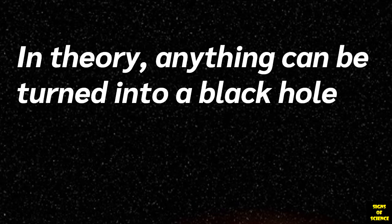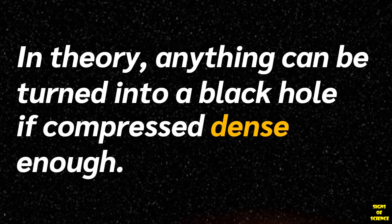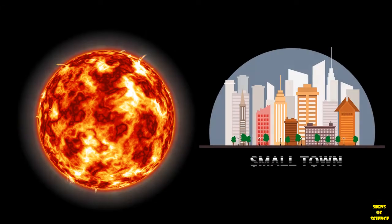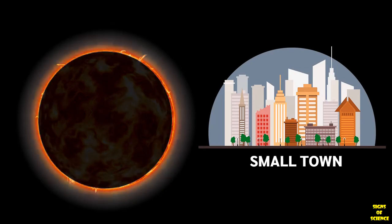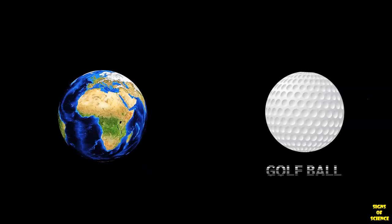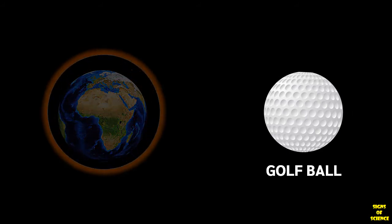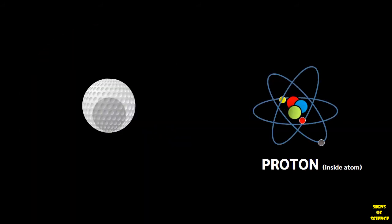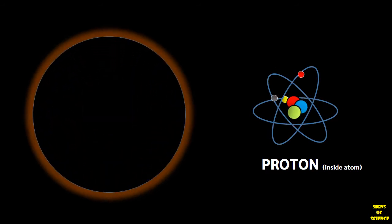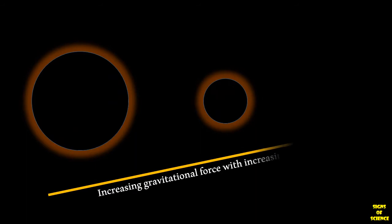In theory, anything can be turned into a black hole of any size if we compress it dense enough. For example, Sun compressed to the size of a small town will turn into a black hole. Earth compressed to the size of a golf ball or a golf ball compressed to the size of a proton will eventually become a black hole. Which means the denser a large mass is packed, the more gravitational force it would have.